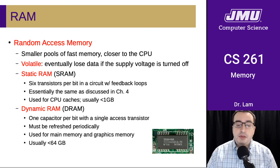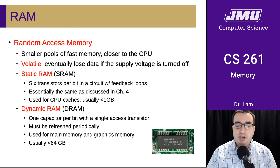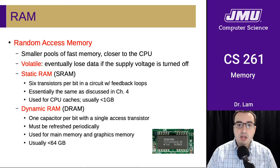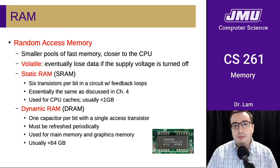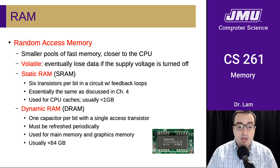We use something called dynamic RAM, or DRAM, to build the larger pools of memory that sit relatively close to the CPU but not on it. DRAM uses a device called a capacitor to store individual bits. Each bit is represented by one capacitor and one access transistor, which is why it's cheaper — we need fewer transistors. The downside is that the capacitors slowly lose their charge, so they need to be refreshed periodically. That's why we call this dynamic RAM — it has to be constantly refreshed. DRAM is used for main memory and graphics memory.